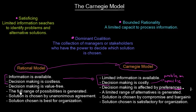Under the rational model, the full range of possibilities is generated — but of course this is not realistic. In practice, only a limited range of alternatives is generated. This leads us to the second idea: bounded rationality, which is the limited capacity to process information. Your mind biologically is not capable of processing limitless amounts of information, so you specify yourself to the particular problem you are trying to solve and consider only a limited range of alternatives.